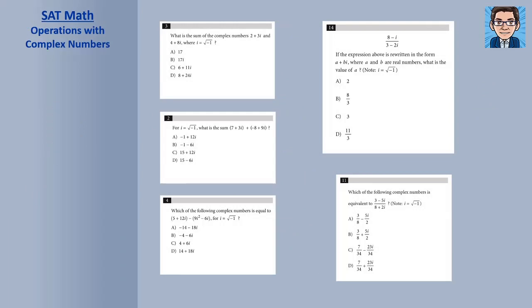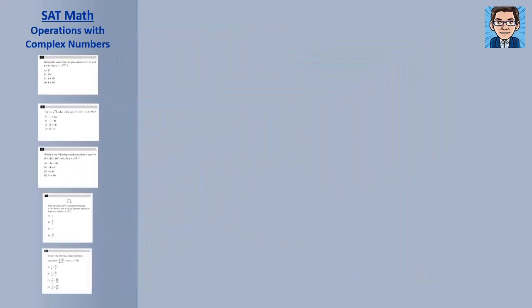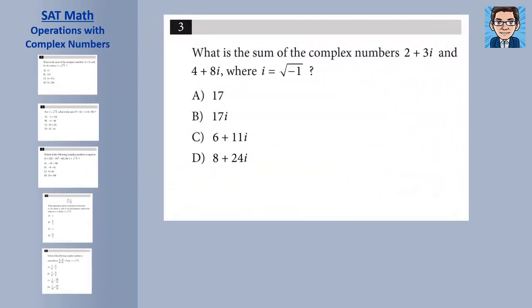Practice problem 1 — very straightforward. We have (2 plus 3i) plus (4 plus 8i). We combine like terms: the real parts, 2 and 4, give 6; the imaginary parts, 3i and 8i, give 11i. The answer is 6 plus 11i, which is choice C.